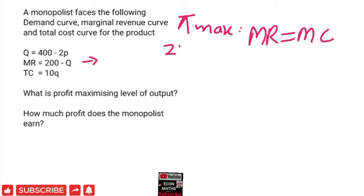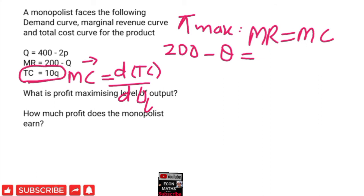So I will write 200 - Q = MC. Now what is the marginal cost? Total cost is given. Marginal cost is the derivative of total cost with respect to quantity, that is dTC/dQ. Differentiating this total cost function 10Q with respect to quantity gives us 10.